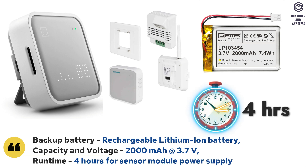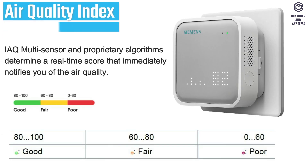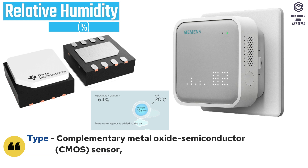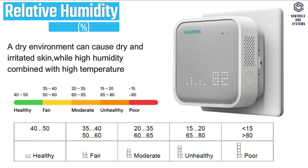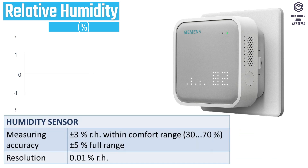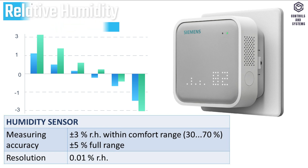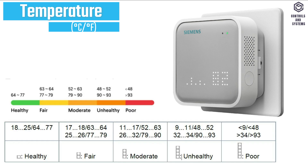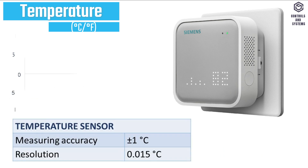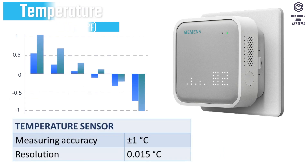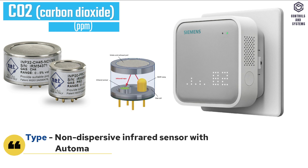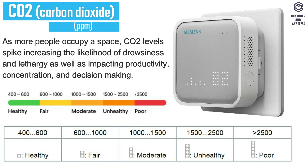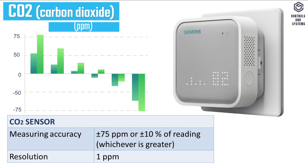Runtime is 4 hours for the sensor module power supply. Functional Data: Air quality depends on the LED colors shown in the table. Humidity sensor type is a complementary metal oxide semiconductor sensor, measuring range 0 to 100% RH. Temperature sensor type is also a complementary metal oxide semiconductor sensor, measuring range 0 to 90°C. CO2 sensor type is a non-dispersive infrared sensor with automatic baseline calibration, measuring range 400 to 5000 ppm. Measuring accuracy and resolution for each are shown in the respective tables.